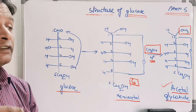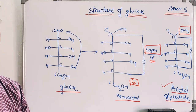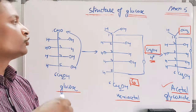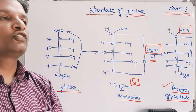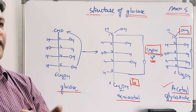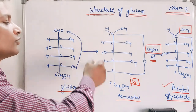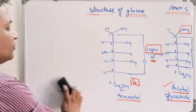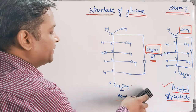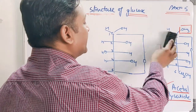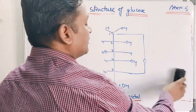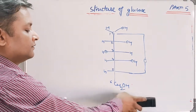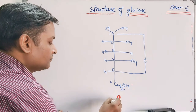After observing this theory, that intramolecular reaction was occurring, attention was diverted from the open chain structure to the cyclic structure of glucose. It was finally confirmed that glucose must be existing in a cyclic form, not in an open chain form. The cyclic form was the hemiacetal form — it was concluded that glucose was actually existing in a hemiacetal cyclic form.